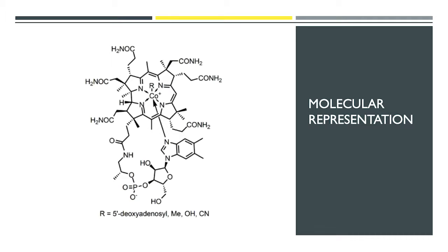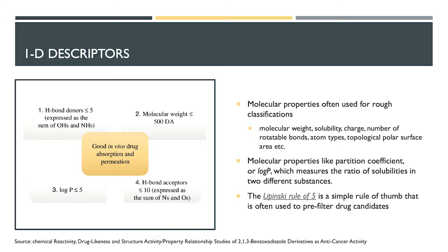When talking about data-driven techniques — machine learning, deep learning — the question is always how to represent your data. How do you take a complex molecular structure and turn it into something you can feed into a model? There are single-dimensional descriptors: scalar values like water solubility, molecular weight, charge, number of bonds. These can be combined into a large feature vector and are still useful. Log-P here is your solubility, and Lipinski's rule of five is another widely known set of rules.